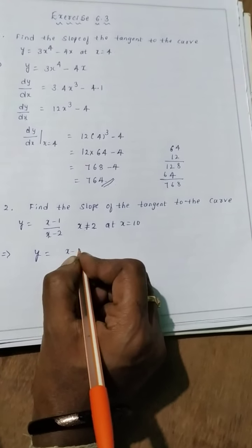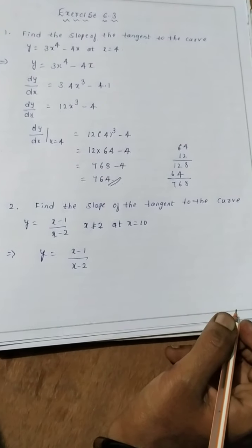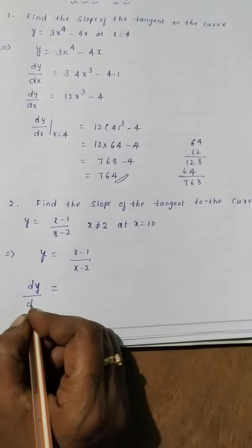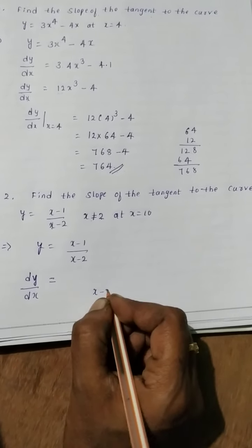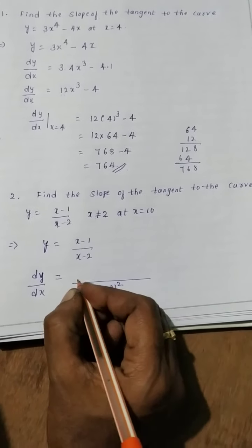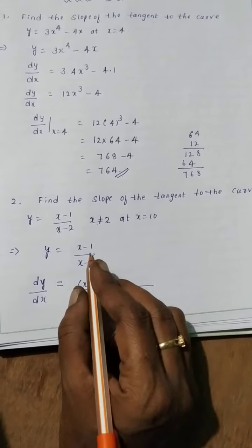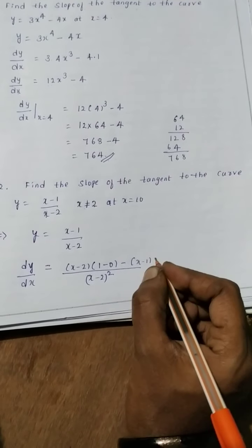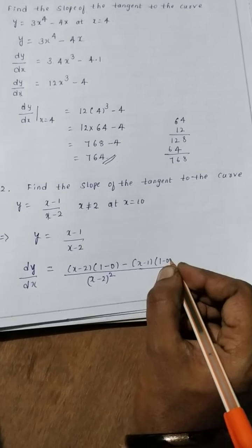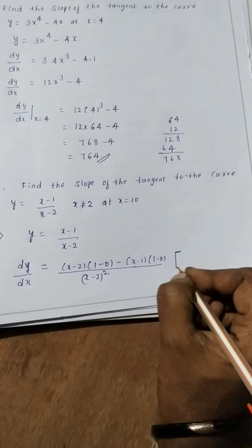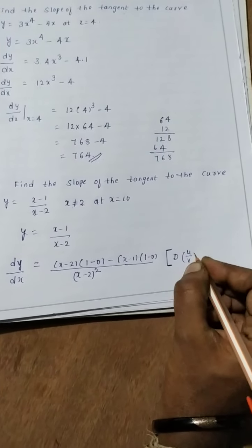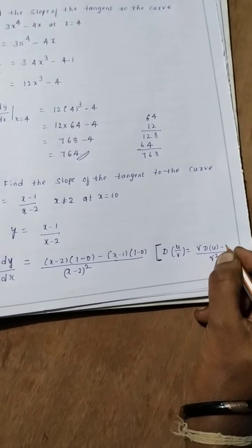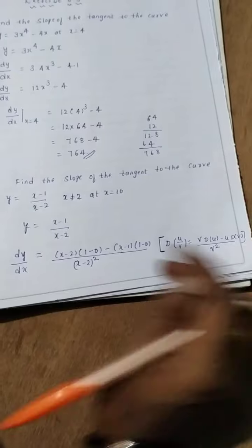Since both numerator and denominator contain polynomials, use the quotient rule (u/v rule). The quotient rule is: (v·u' - u·v') / v². So the denominator squared is (x-2)², multiply by the derivative of the numerator (which is 1), minus the numerator (x-1) times the derivative of the denominator (which is also 1).